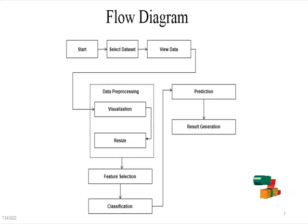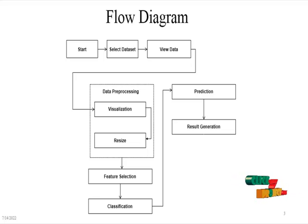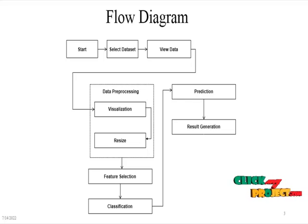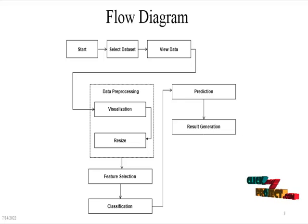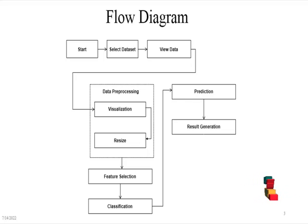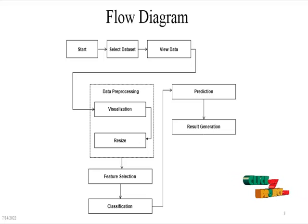Then we use the sample images from the console working directory, after which it moves into feature selection. In feature selection, we select the independent variable and dependent variable. After selecting the independent variable, we split the dataset into training dataset and testing dataset. Then it processes into the classification method, where we use the convolutional neural network deep learning algorithm to train, classify, and predict the images.